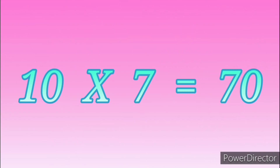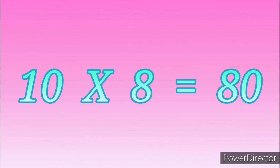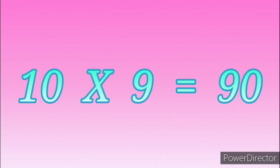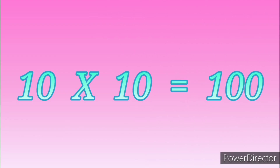Ten sevens are seventy. Ten eights are eighty. Ten nines are ninety. Ten tens are one hundred.